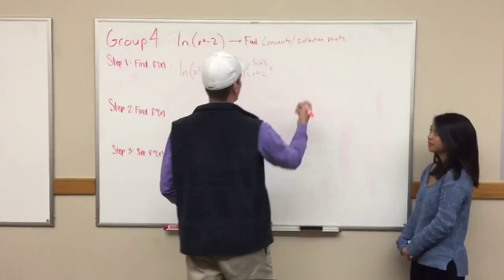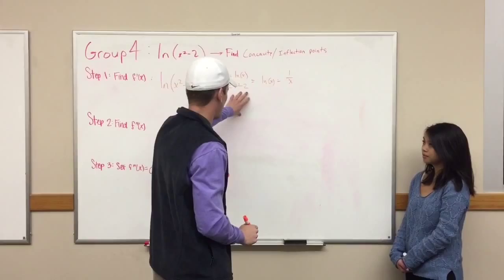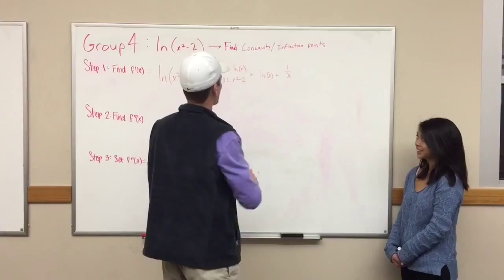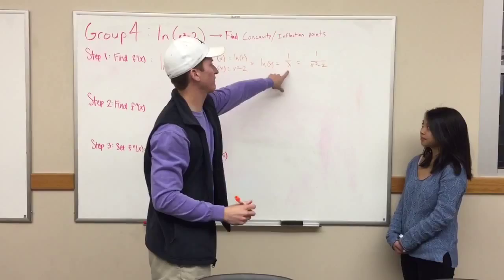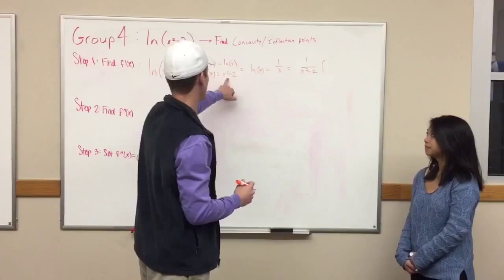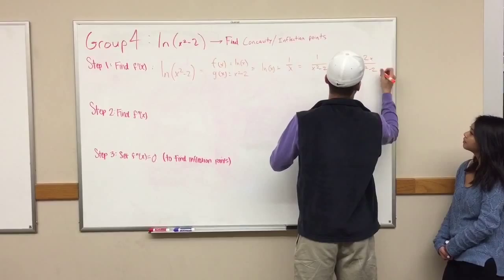With the chain rule, first we find the derivative of ln. The derivative of ln(x) is simply 1/x. Next, we plug the original inside equation back in for x, giving us 1/(x² - 2), and then multiply that by the derivative of g(x). By the power rule, the derivative of x² - 2 is 2x. So after multiplying those together, we get 2x over (x² - 2).